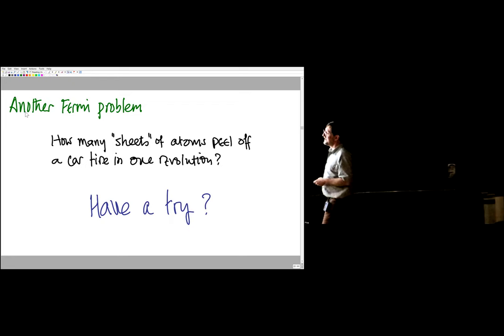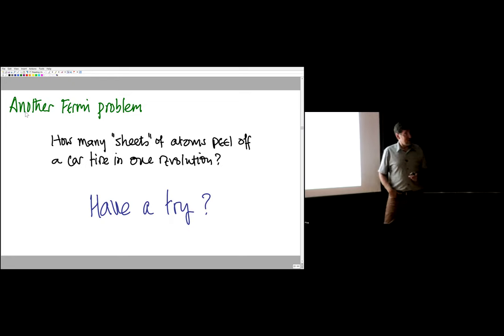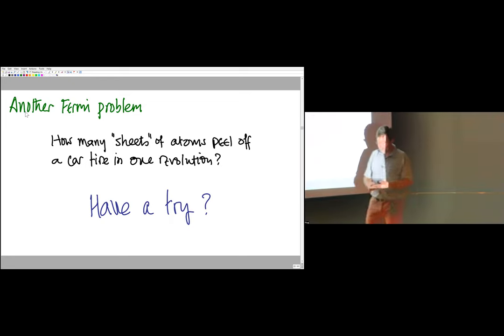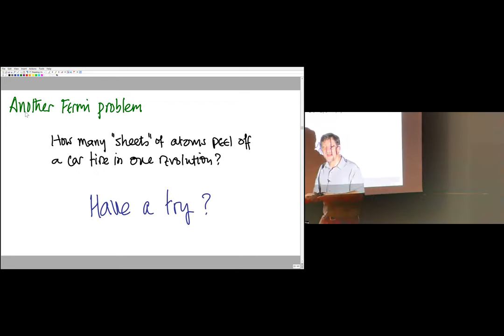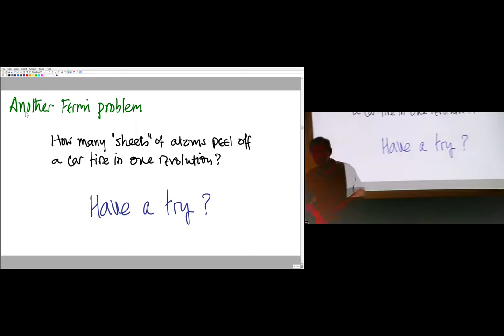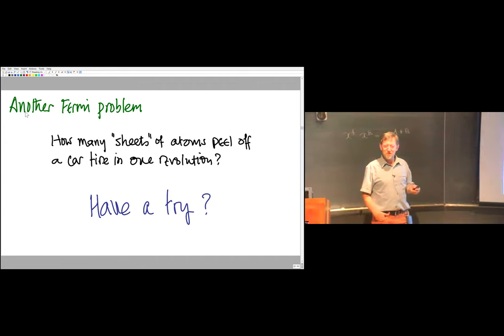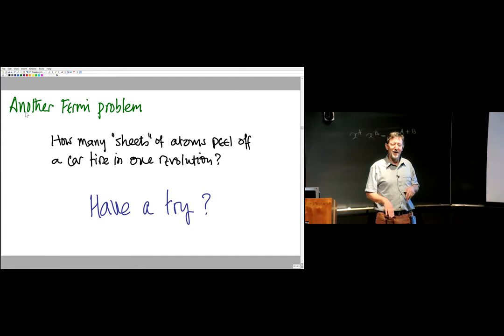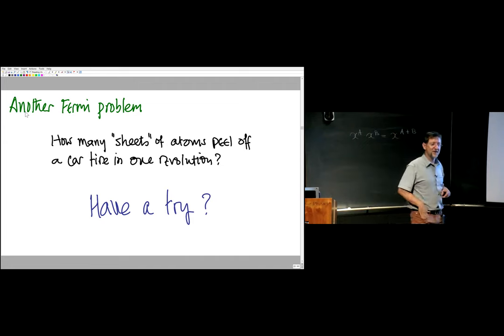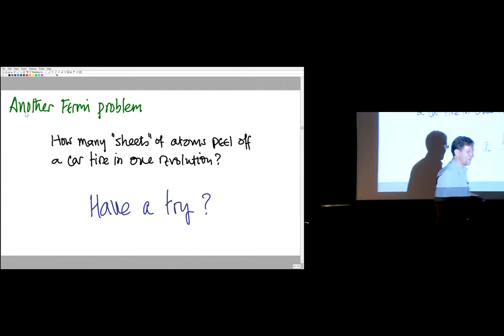You know it's a little bit of a misfortune that every time your car tire goes around, it leaves a little bit of itself on the road. If it didn't, it wouldn't wear out. The question is, how much does it leave on the road? How many sheets of atoms get left on the road every time a car tire goes around?